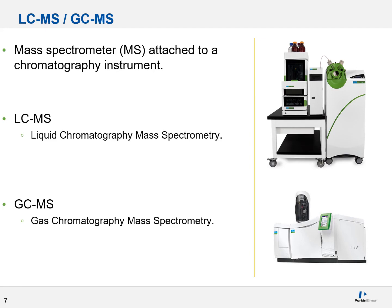Both HPLC — known as LC for short — and GC are separatory techniques. They tell you what you have, but are not as helpful in identifying the structure of your analyte. For that you need a mass spectrometer, also called an MS, which is attached or mated to your chromatography instrument. An MS attached to an LC is called a liquid chromatography mass spectrometer, or LC-MS. Similarly, if a mass spec is attached to a GC, you have gas chromatography mass spectrometry, GC-MS.